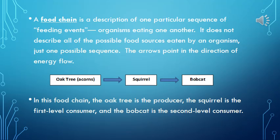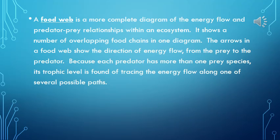The arrows point in the direction of energy flow. In this food chain, the oak tree is the producer, the squirrel is the first-level consumer, and the bobcat is the second-level consumer. A food web is a more complete diagram of the energy flow and predator-prey relationships within an ecosystem; it shows a number of overlapping food chains in one diagram. The arrows in the food web show the direction of energy flow from the prey to the predator. Because each predator has more than one prey species, its trophic level is found by tracing the energy flow along one of several possible paths.